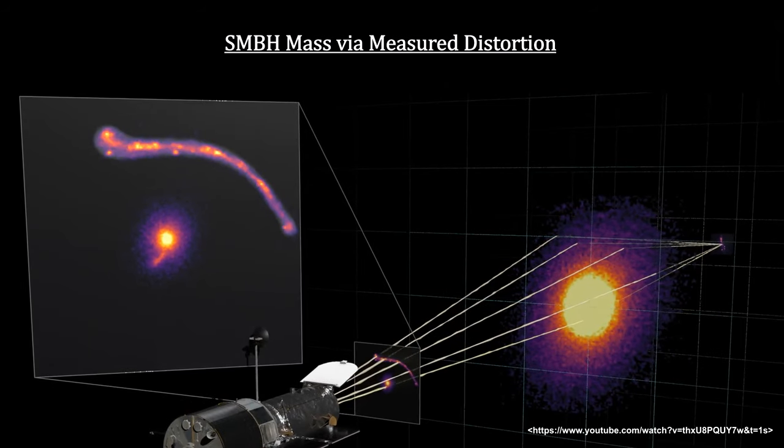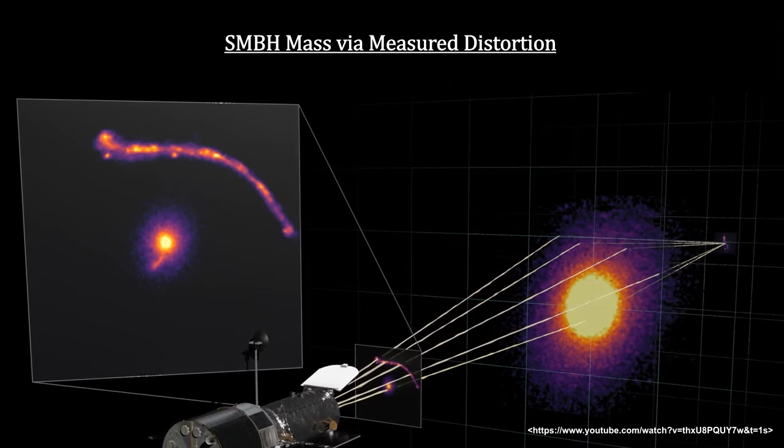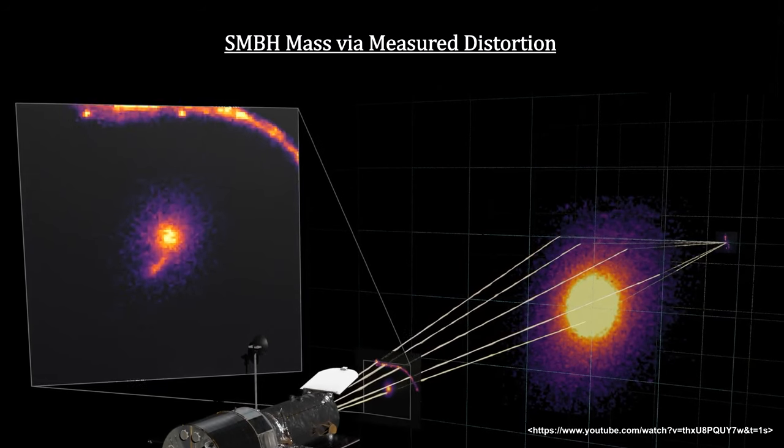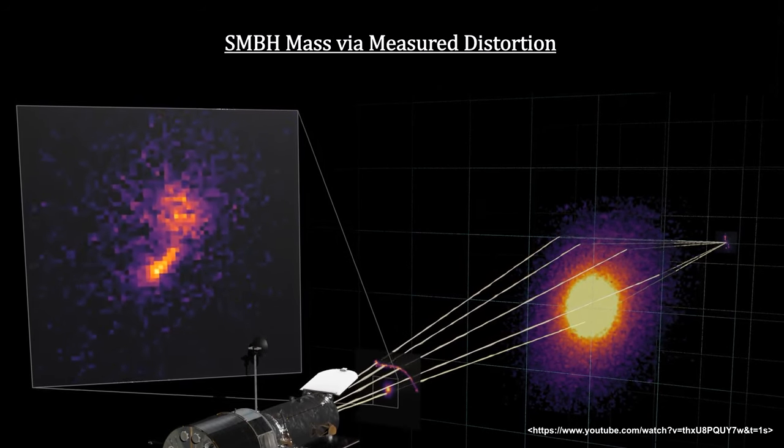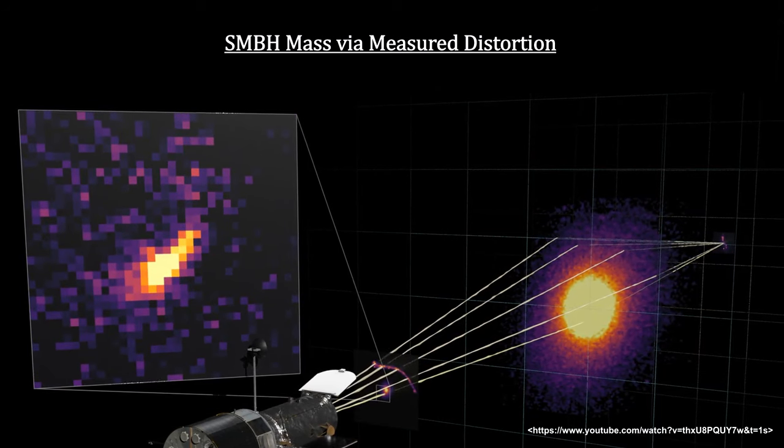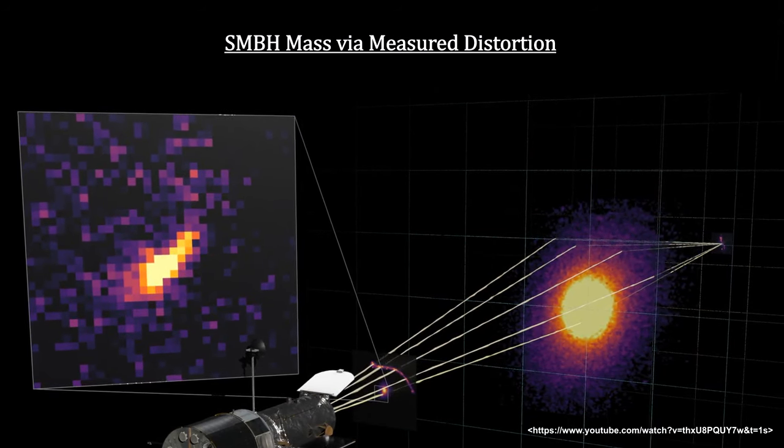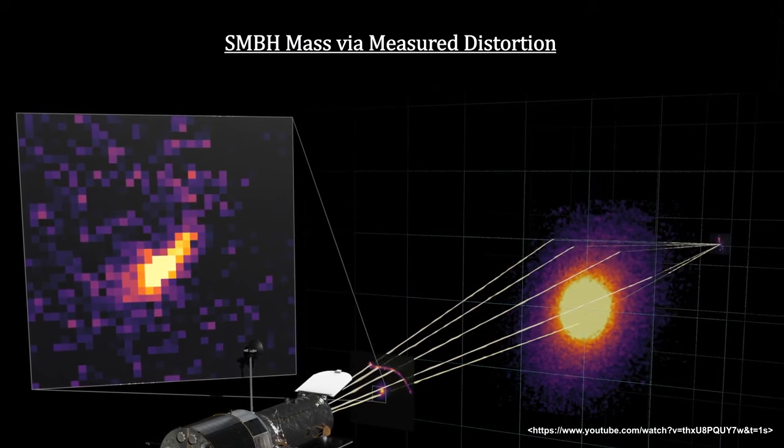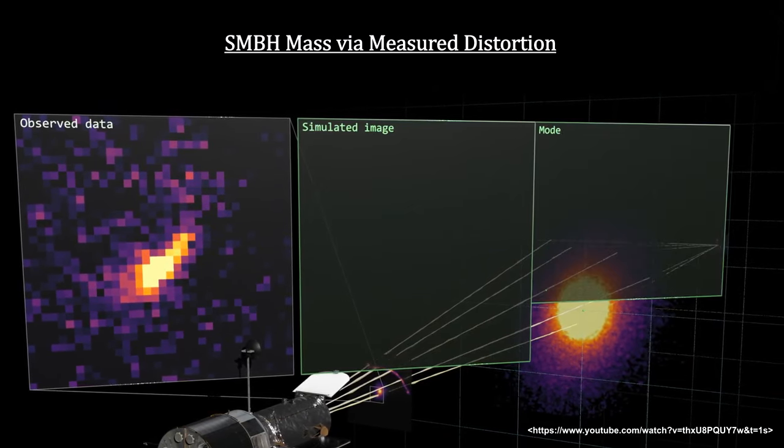In this example, the lensing galaxy distorts the distant galaxy image into a wide arc. In addition, some of the light passes near to the central black hole. The black hole acts as a lens and forms a duplicate image of the distant galaxy.